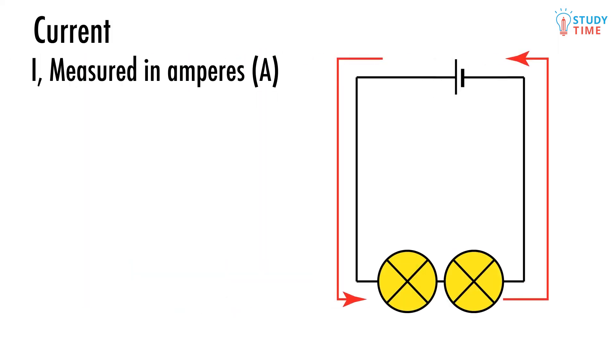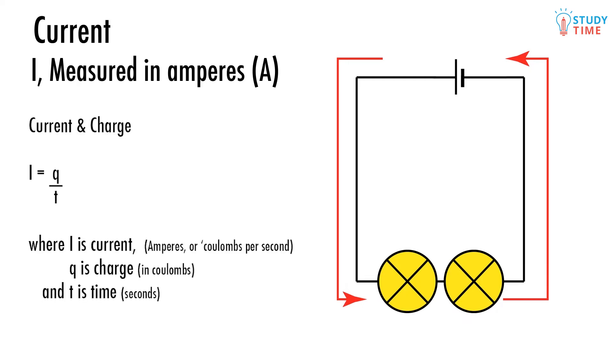Current is measured in amps or amperes and the symbol is I for some reason. You're introduced to charge in an earlier video. Charge is linked to current with I equals Q divided by T, where Q is the amount of charge measured in Coulombs and T is the time in seconds. You can see that the current is the rate of charge flow or the amount of charge flowing past a point per second.